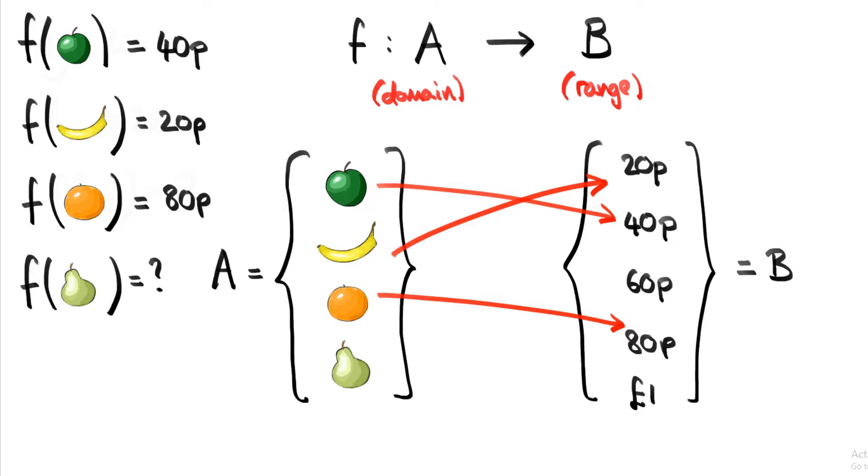But that was the whole point of restricting ourselves to a certain set of inputs in the first place. So let's say f of pear is 80p. There's no reason why orange and pear can't cost the same. Let's have a look at what we've done here. We've said that two arrows pointing to a single element in B is fine. Let's call it a greedy element, and all it means is that there's two elements in A that cost the same.